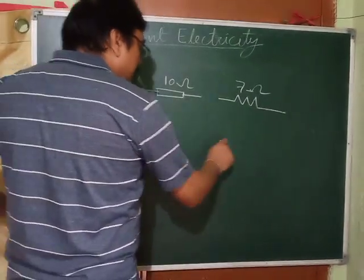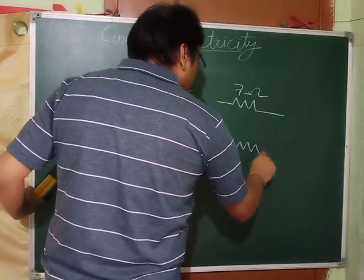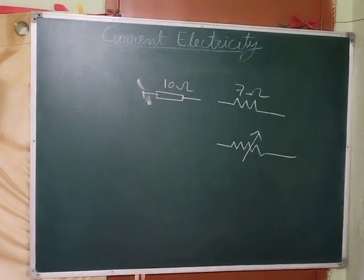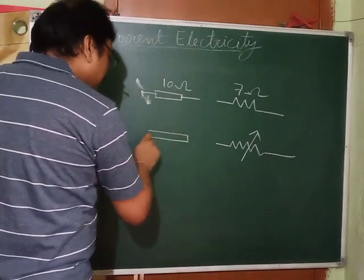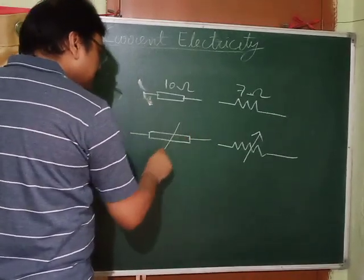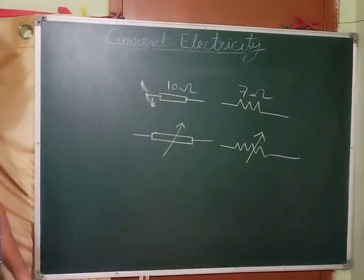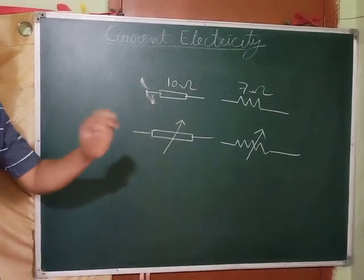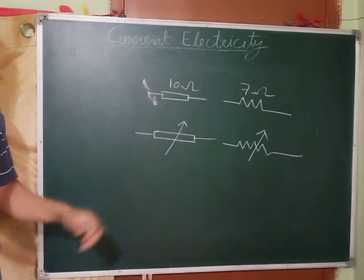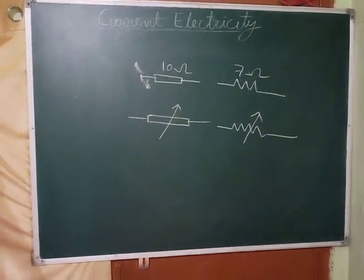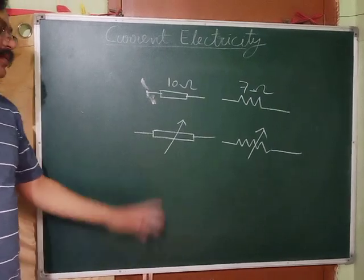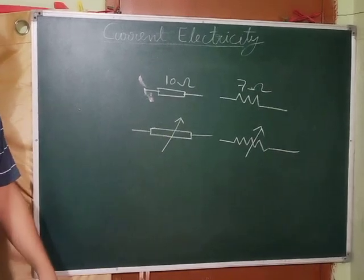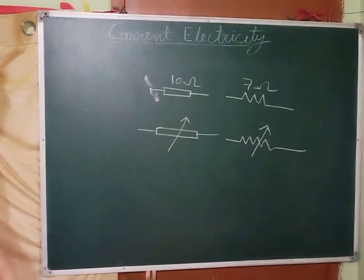Variable resistors have symbols with an arrow. Their resistance value can be changed by some movable part. Different types of variable resistors are available in the market, ranging from a few ohms to higher values.